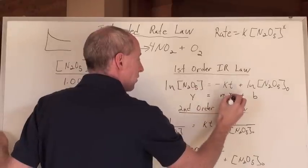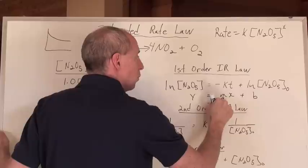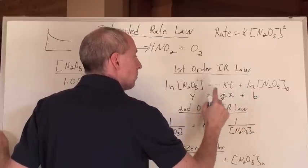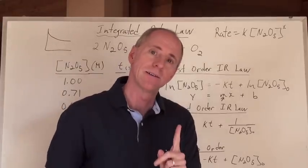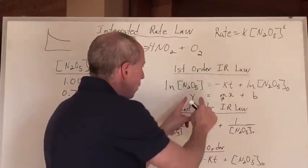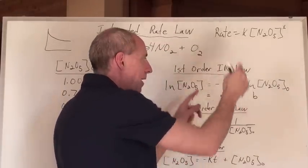Y equals MX plus B. Y, X. What's that? The slope. What's that? The Y intercept. But here's what we're really concerned about. Can you then do this? Think about it. Y and X. Make a graph. Make a graph.